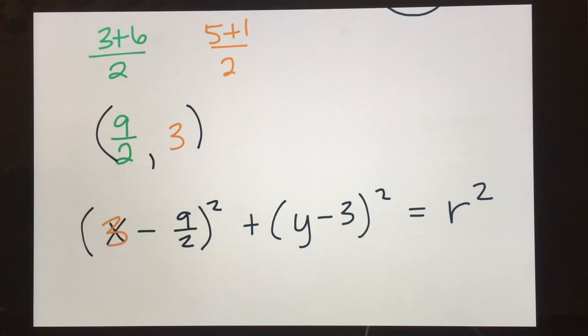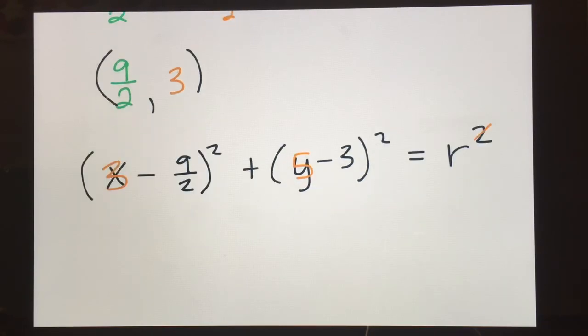So 3 minus 9 halves squared, 5 minus 3 squared. Now this becomes a calculator problem. So I would just type that in my calculator as is. And what you're going to find is that if you type this in and hit equals, it's going to equal 6.25. So that means this is 6.25.